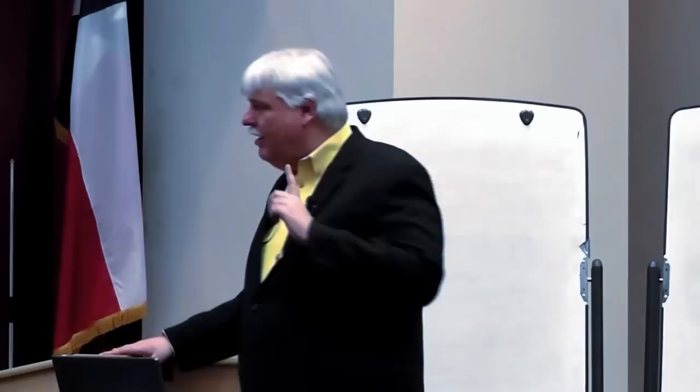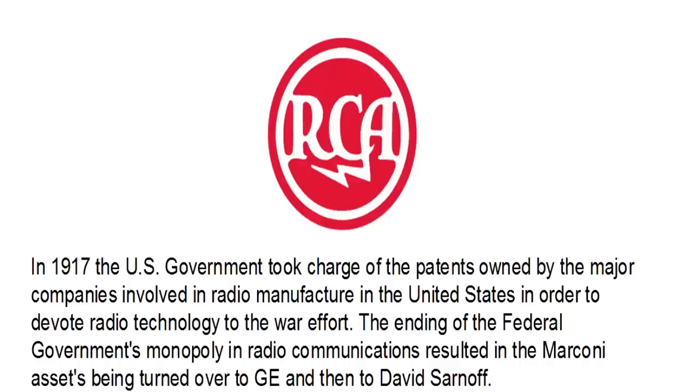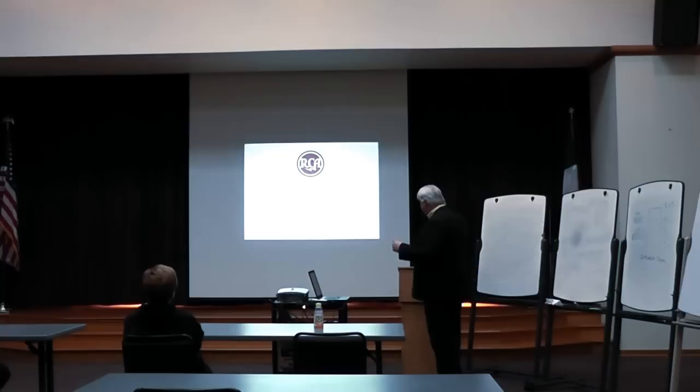The government made a big conglomerate out of everything radio during the war, turned it over to GE, then through lobbying it went to David Sarnoff. RCA became the powerhouse starting in 1920 with the creation of NBC. Sarnoff was real good at manipulating the U.S. government—he had a lot of lobbyists and money. He could get the government to do what he wanted, manipulating them through legislation to hinder his competition.